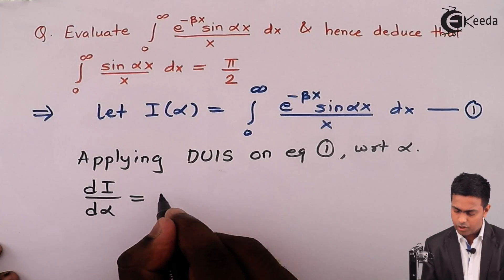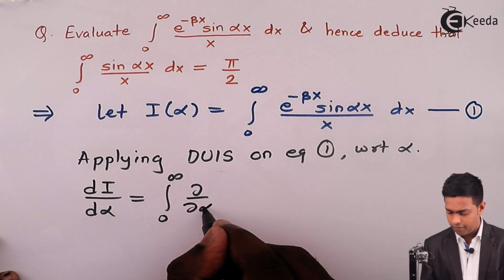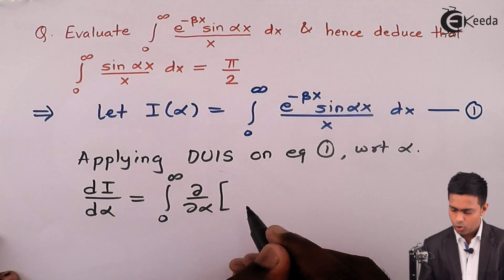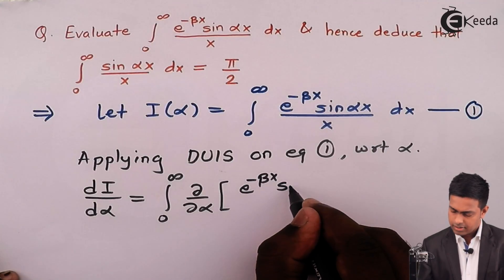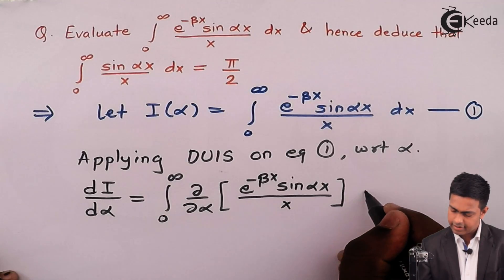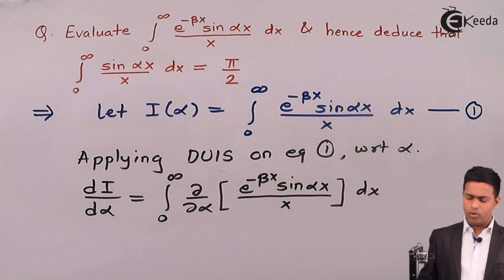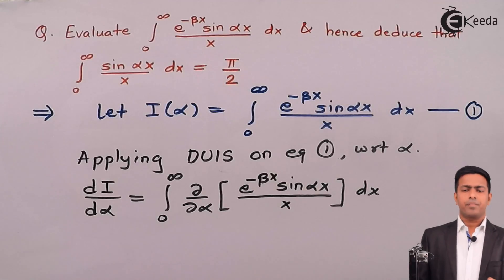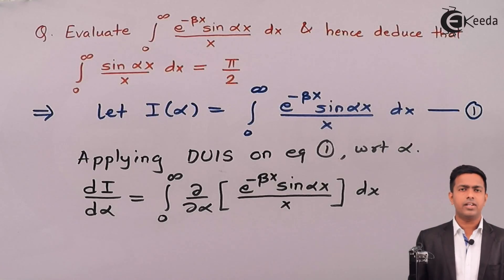...the integration from 0 to infinity of the partial derivative with respect to alpha of e raised to minus beta x times sin(alpha x), whole upon x, dx. This is the definition of DUIS, where on the right hand side we take the partial differentiation with respect to the parameter inside the integral sign.